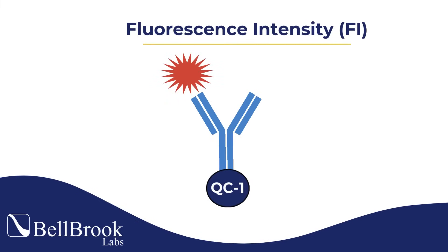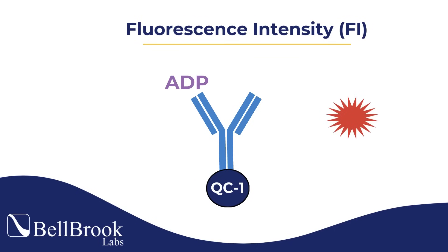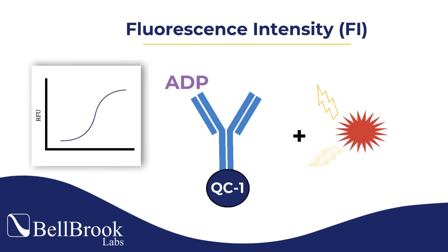FI uses a quencher molecule that lowers the fluorescent signal when in close proximity. When the tracer is competed off, the signal will increase.